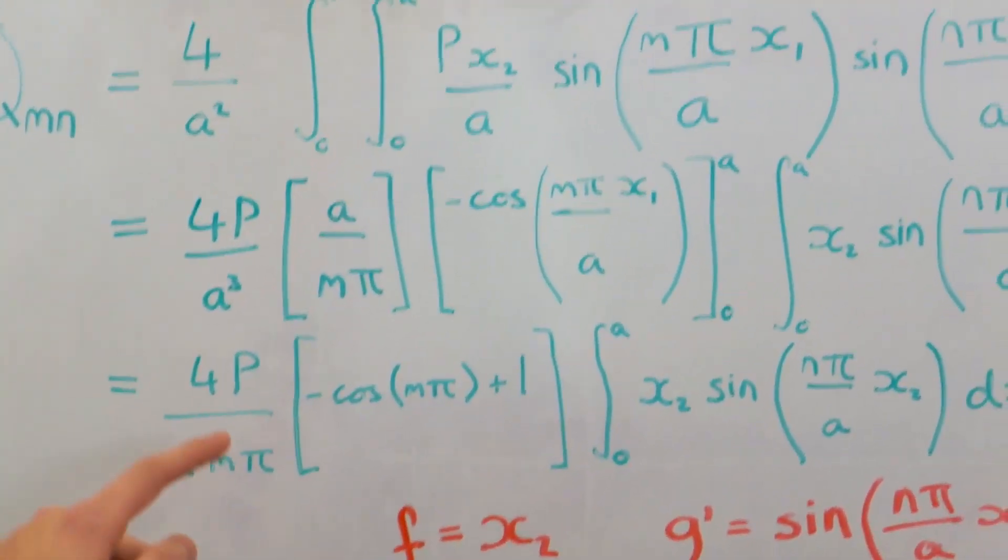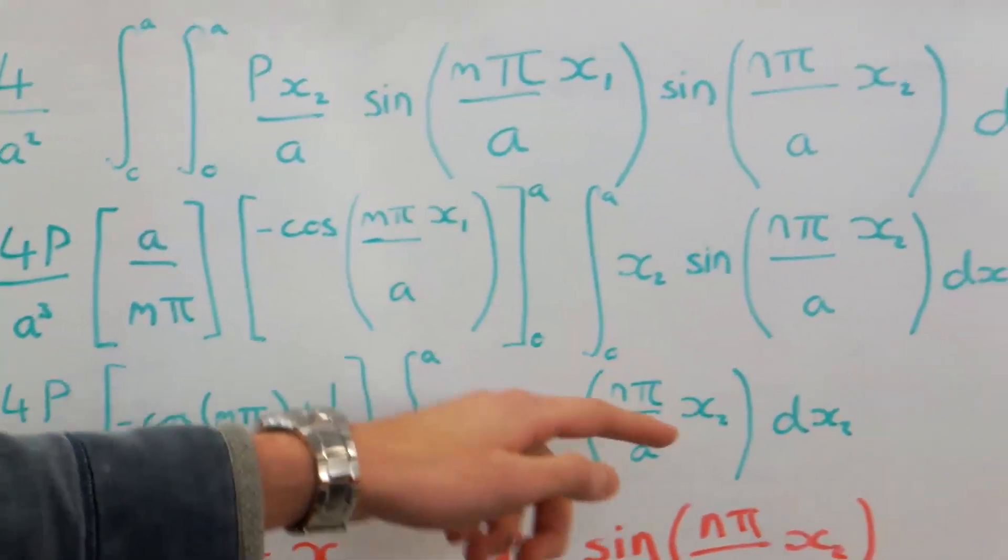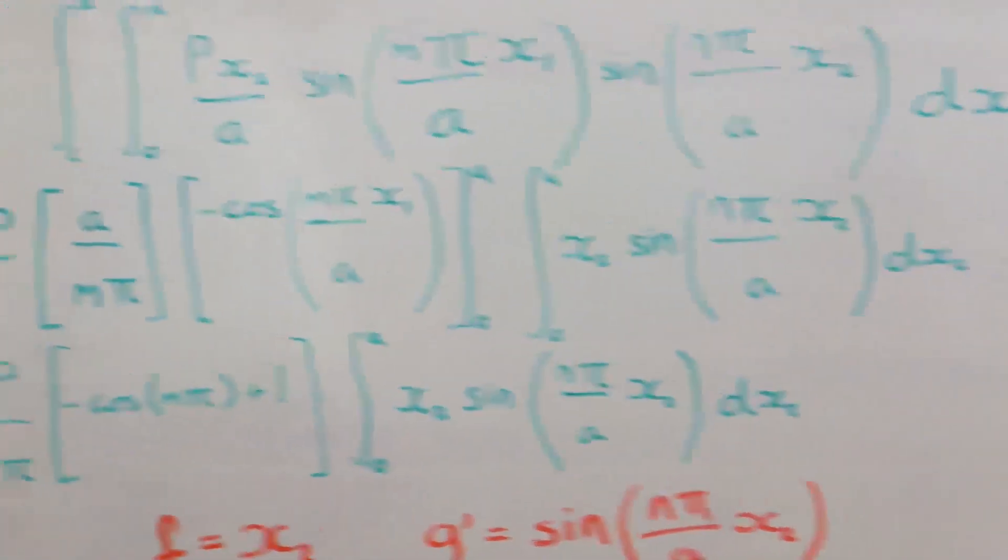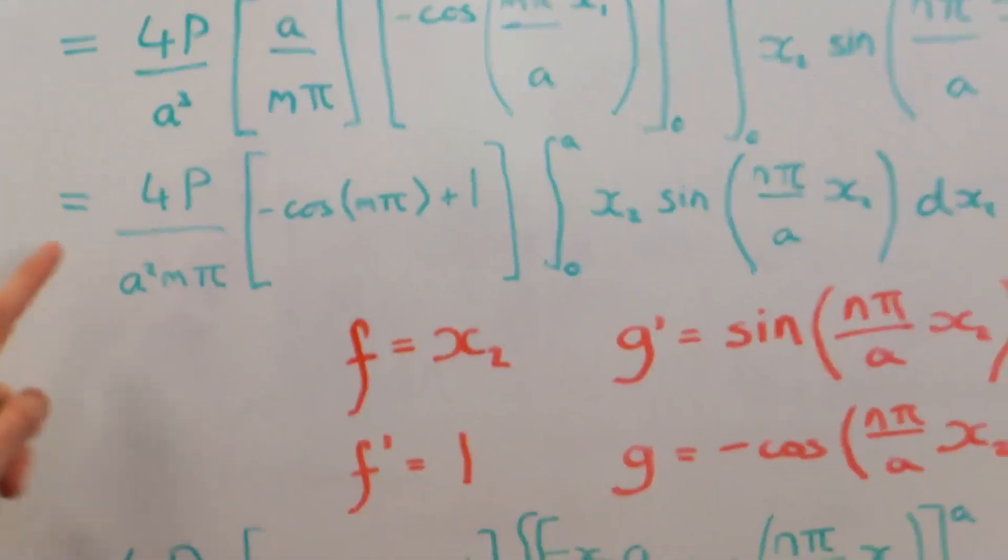And we can take that outside the bracket, outside the integral. So we've only got x2s. And then we find what this is.